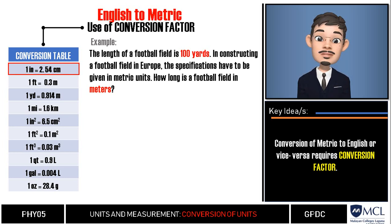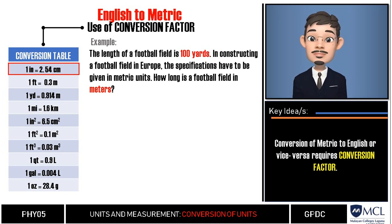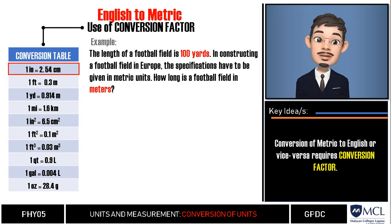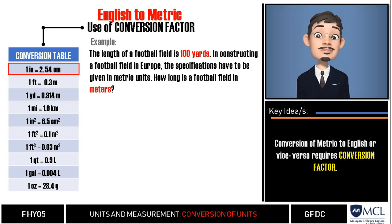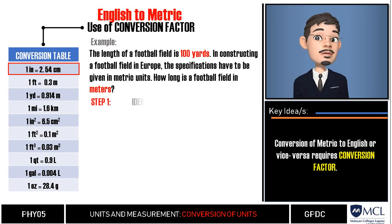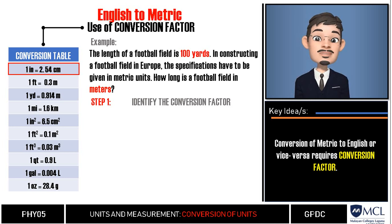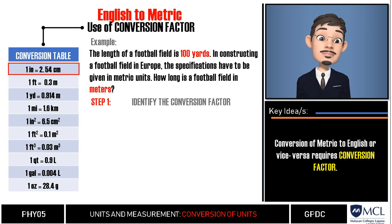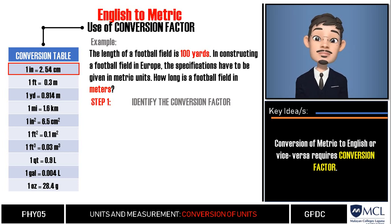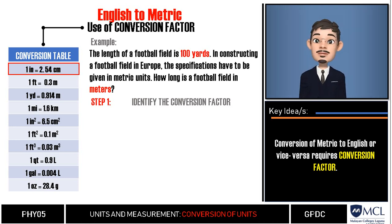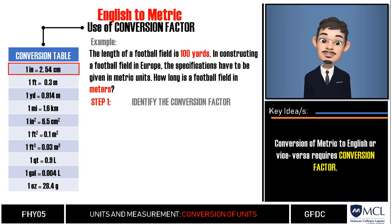Here is an example: the length of a football field is 100 yards. In Europe, specifications must be given in metric units — how long is the field in meters? To convert, we follow three steps. First, identify the conversion factor. From the table, one yard is equal to 0.914 meter.